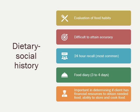The dietary and social history is usually taken when the registered dietitian sits down with the patient one-on-one. The registered dietitian will evaluate the food habits of the patient by having an in-depth discussion with them. They will ask the patient to recall all of the foods they have had within the past 24 hours and ask the patient to show them the food diary they should have been keeping for the past three to four days.